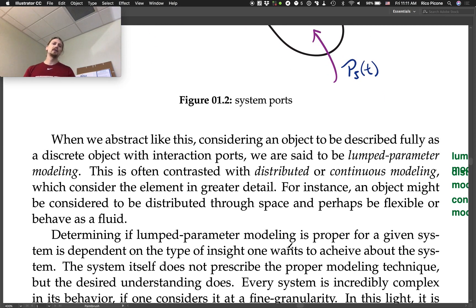When we abstract like this, considering an object to be described fully as a discrete object with interaction ports, we are said to be doing lumped parameter modeling. This is often contrasted with distributed or continuous modeling, which consider the element in greater detail. This is one of the fundamental differences between the type of modeling we're going to do in this class, which is lumped parameter modeling, and the type of modeling, mathematical modeling, you'll do in most of your other engineering classes—a good number of them are focused on this more continuous or distributed modeling.